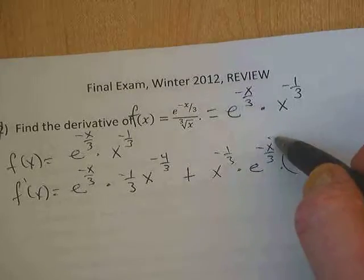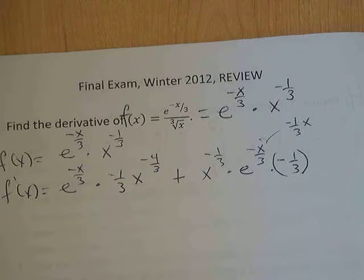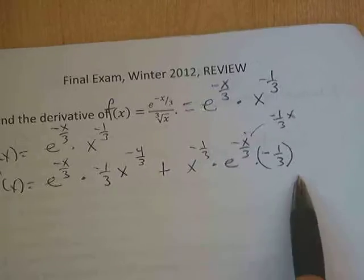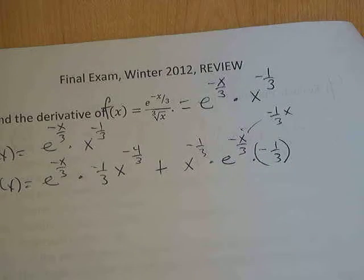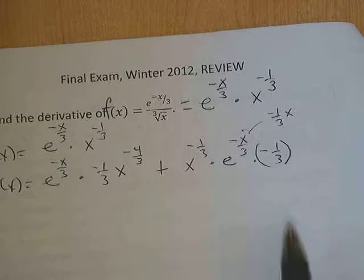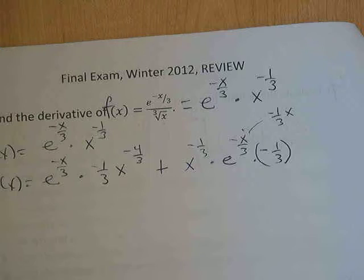What you need to see, and some people don't, is that this is negative 1 third x and the derivative of negative 1 third x is just negative 1 third. People see it written this way and it confuses them. Oh, do I need the quotient rule? Oh, that's complicated. It's negative 1 third times x and the derivative of that is negative 1 third.